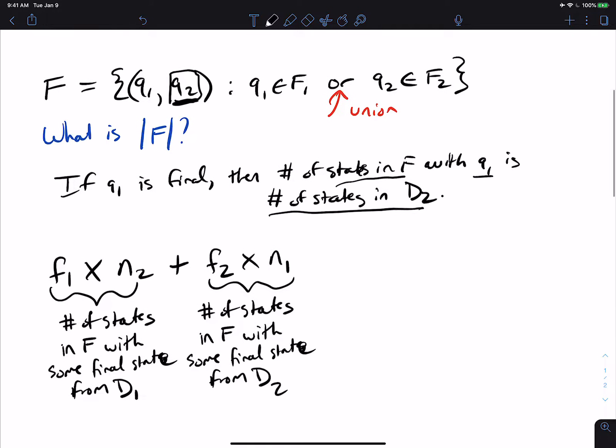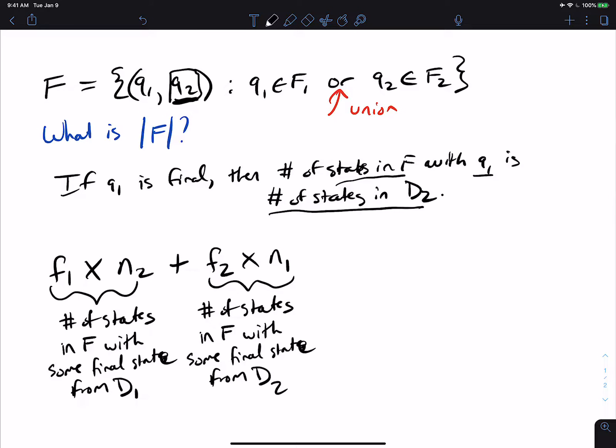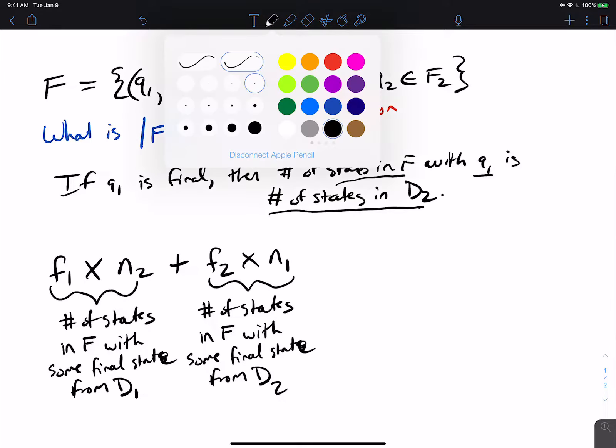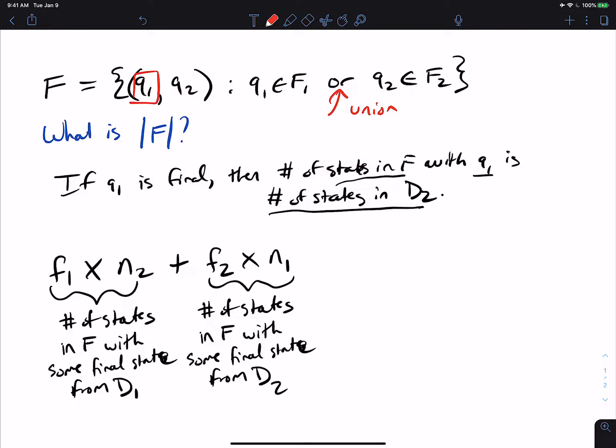So the number of states in F with some final state from D2 this time. And some students will look at that and say, yeah, that's the number of final states. But the thing we shouldn't consider here is, what about the states that are both final? So what if, say, Q1 and Q2 are final?